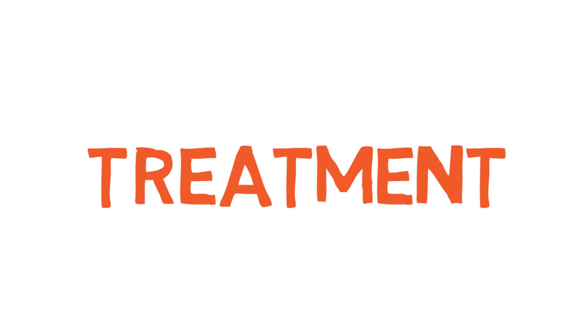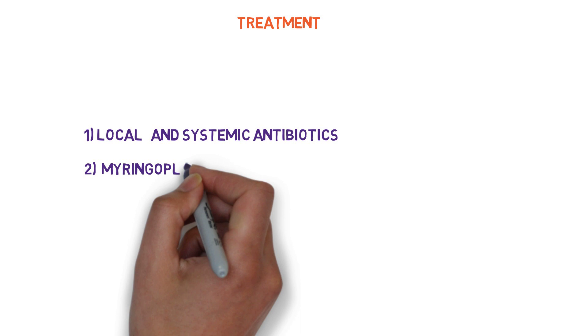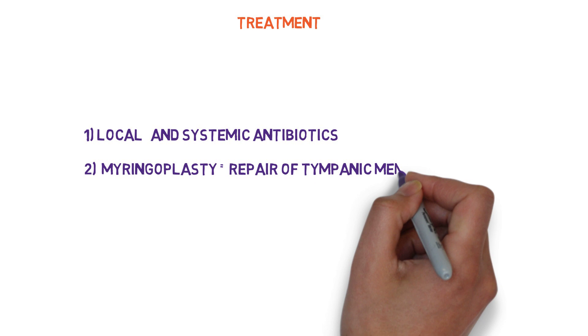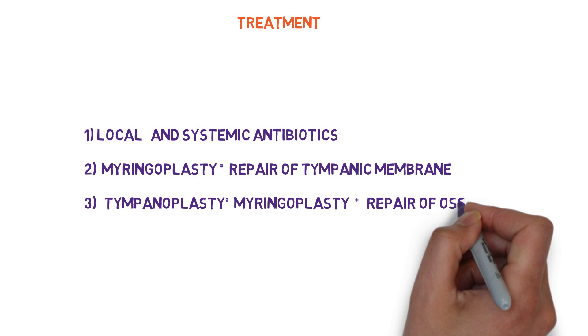Moving toward treatment: since ear discharge is present, the disease may be bacteriological in origin, so we can give local and systemic antibiotics. Another option is myringoplasty, in which repair of the tympanic membrane is done. The third option is tympanoplasty, which includes myringoplasty (repair of the tympanic membrane) plus repair of the ossicles. This is the treatment of tubotympanic disease.